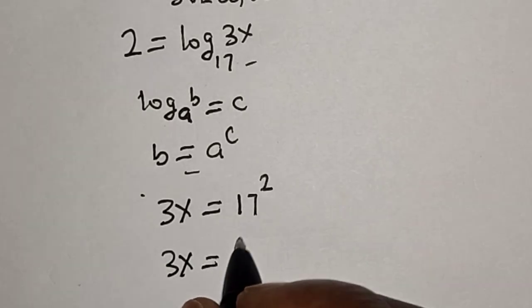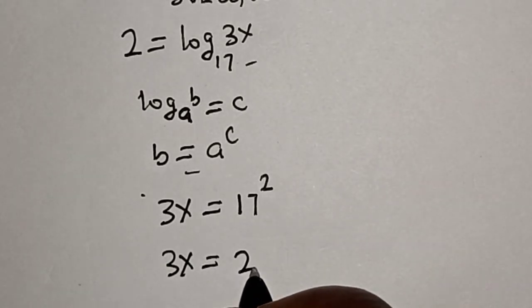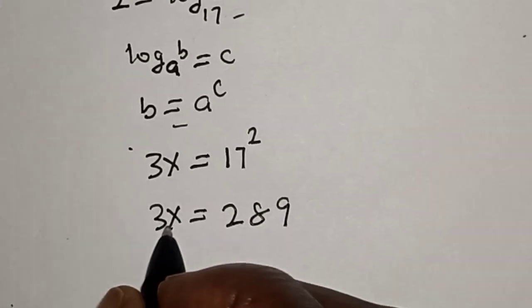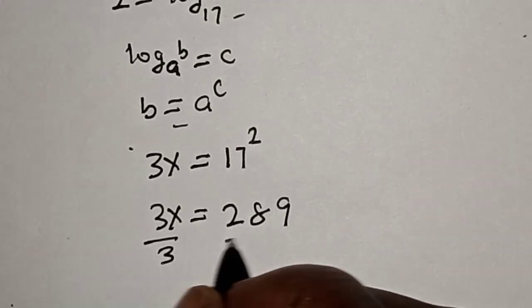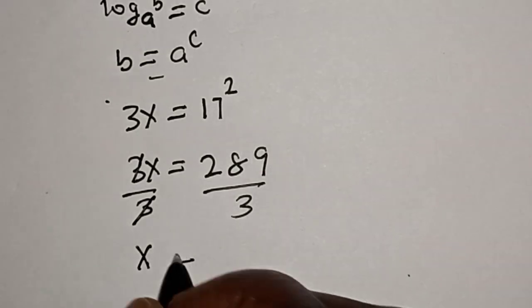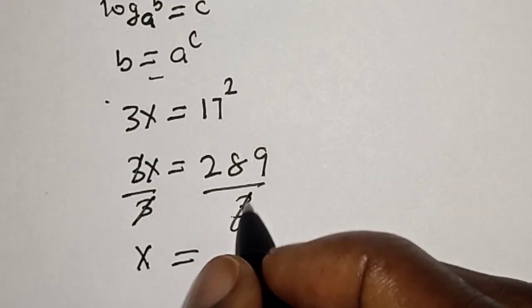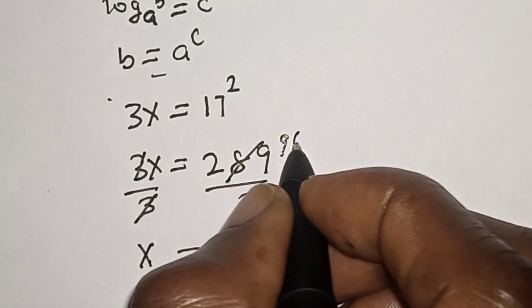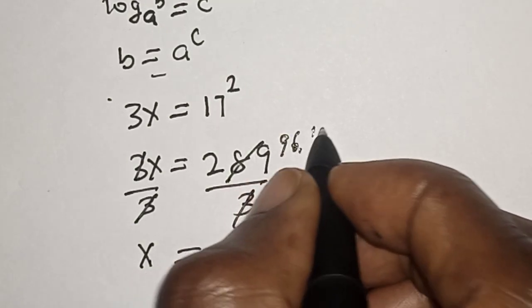Let's divide both sides by 3. x equals 96 whole number, then 1 over 3.